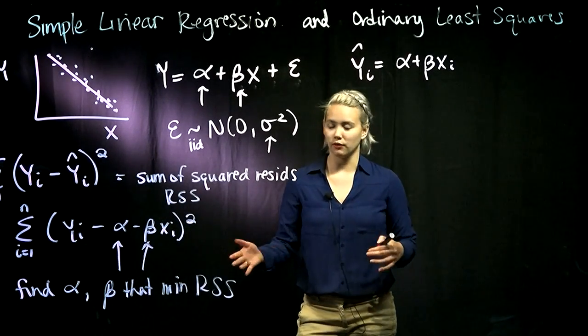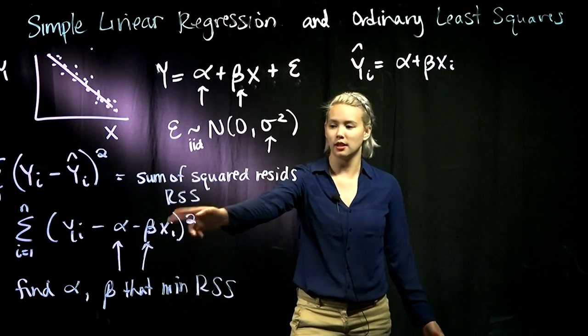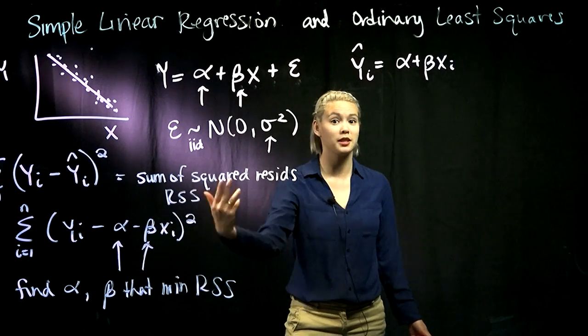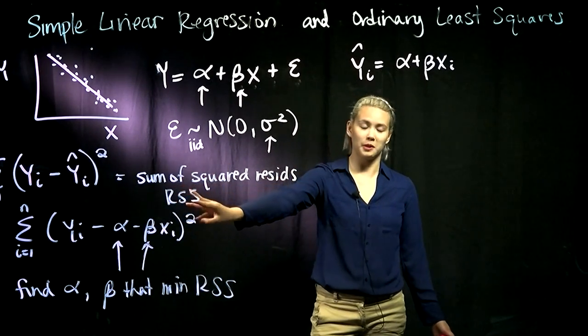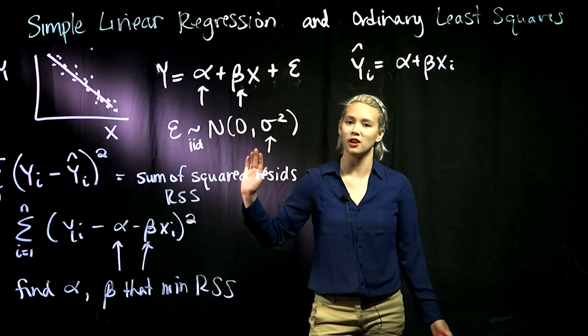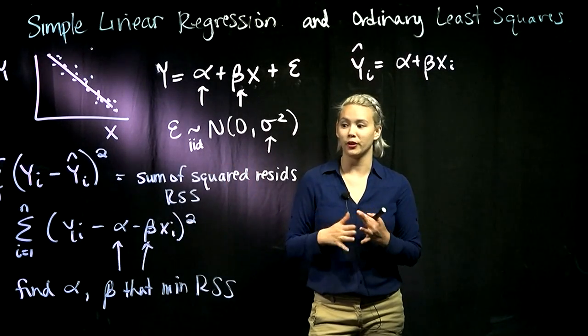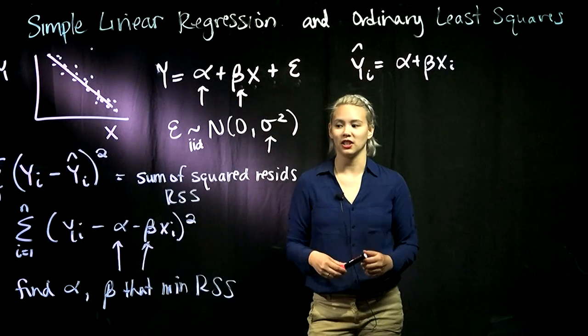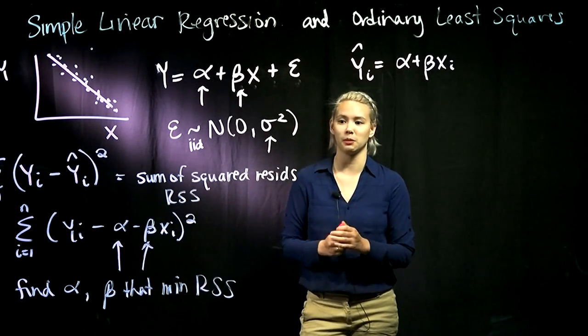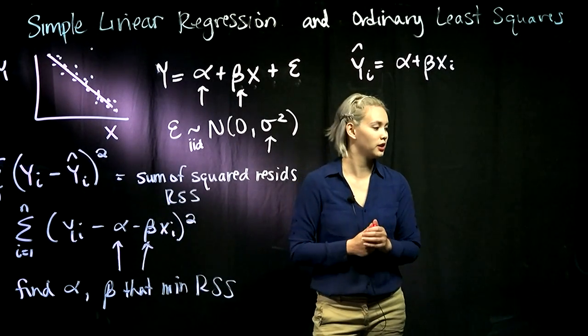This is not very difficult, we just need to do a little bit of calculus. If we're trying to minimize this, we take our derivative with respect to alpha, our derivative with respect to beta, set those equal to zero, solve for alpha and beta. Then we take the second derivative to make sure we're actually minimizing the residual sum of squares and not maximizing it.